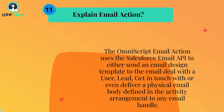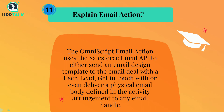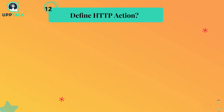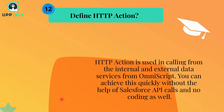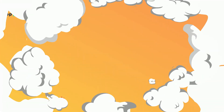Explain email action. The OmniScript email action uses the Salesforce email API to either send an email design template to the email address of the user, lead, contact, or even deliver a physical email body defined in the activity arrangement to an email handle. Define HTTP action — HTTP action is used for calling from internal and external data services from OmniScript. You can achieve this quickly without Salesforce API calls and no coding.